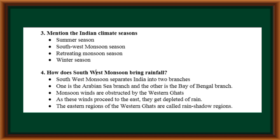How does the southwest monsoon bring rainfall? The southwest monsoon separates into two branches over India: one is the Arabian Sea branch and the other is the Bay of Bengal branch. Monsoon winds are obstructed by the Western Ghats. As these winds proceed to the east, they get depleted of rain. The eastern region of the Western Ghats is called the rain shadow region.